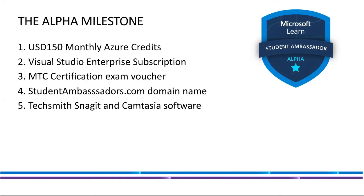Once you become an Alpha Microsoft Learn Student Ambassador, you get that one exam voucher with which you can take your exam. In addition to that, you get your own student ambassadors domain name, which is the coolest thing ever. You also get access to TechSmith Snagit and Camtasia software, which you can use for video editing or screen recordings.